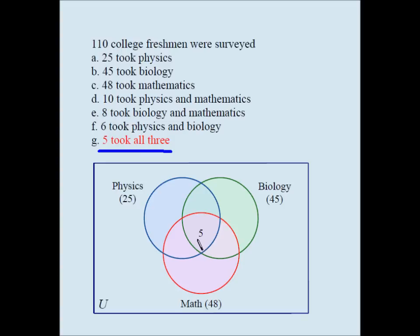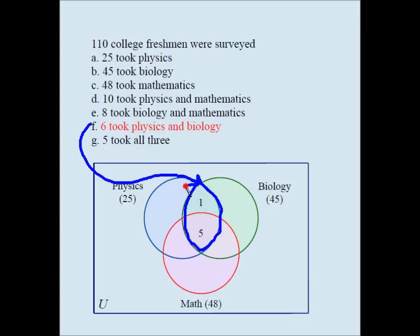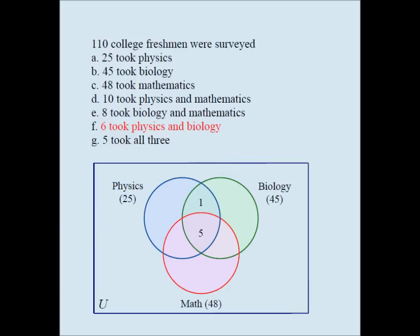I have five students who took all three, so I put five in the center. Now I have to be very careful: six took physics and biology. This football-shaped overlap should represent six, so if the center is already five, I have to put one here. Six took physics and biology means the entire overlapping area between physics and biology is six — there's only one person who took only physics and biology.